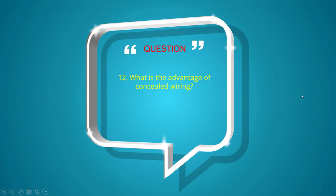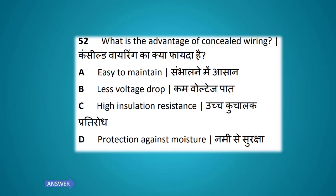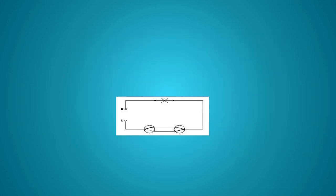What is the advantage of concealed wiring? Options: easy to maintain, less voltage drop, high insulation resistance, protection against moisture. The answer is protection against moisture.